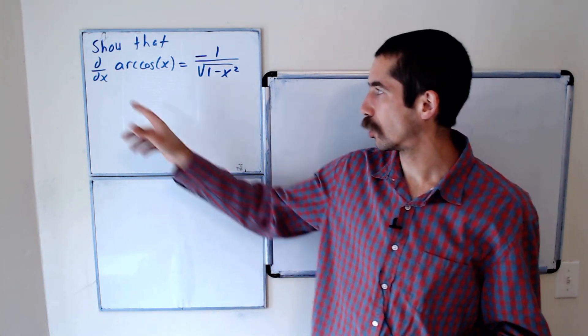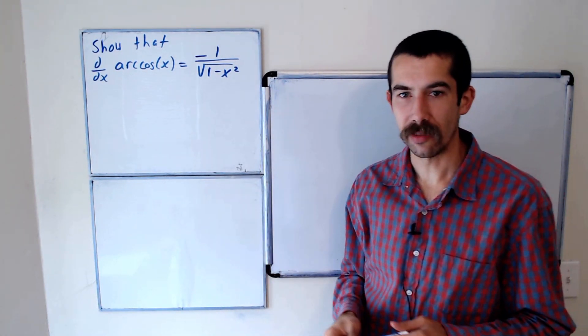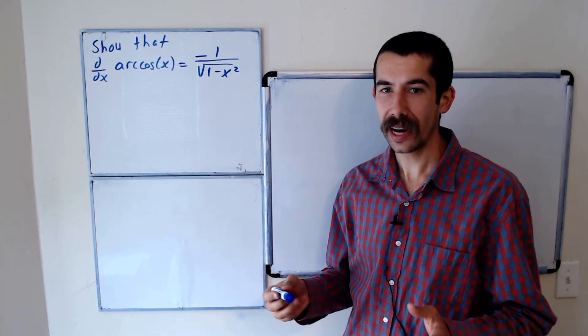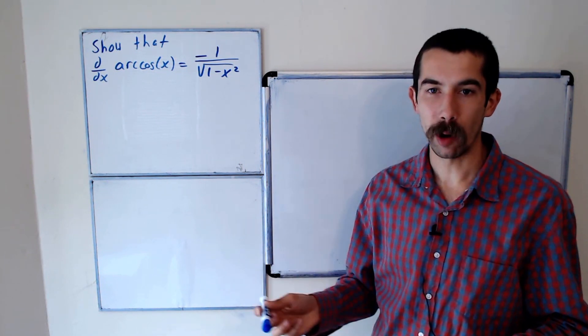Today I'm going to show you why the derivative of arc cosine of x is equal to negative 1 over the square root of 1 minus x squared.